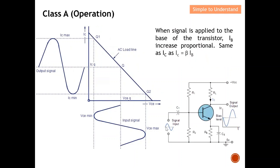Now, I apply a sine wave to the base of the transistor. When a sine wave is applied to the base, the base current IB will increase proportionally. Therefore, the collector current IC is governed by the equation IC = β × IB. So when IB increases, IC also increases. The transistor provides a gain by this beta factor. This is how I arrive at the waveform seen at the collector current.